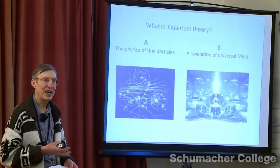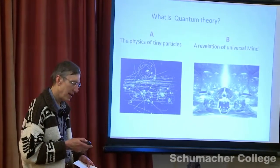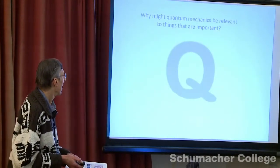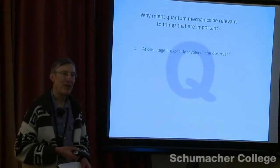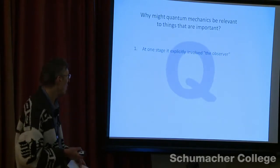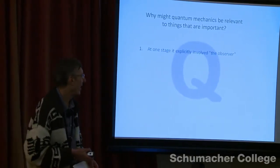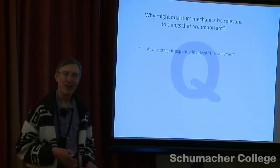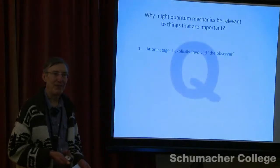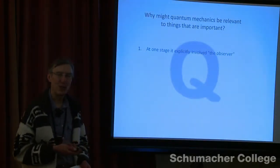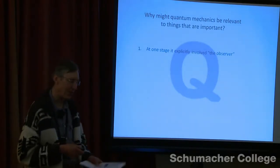I want to outline a few points which suggest that quantum theory really must have something interesting in it. The first is that whatever you read about quantum theory, it goes on about the observer. Now, who or what the observer is is a contested issue — but we are observers, we look at things, we experience things. Observers are us. So if observers are essential, if this is what it is all about, then it sounds as though it could well have something to do with consciousness.